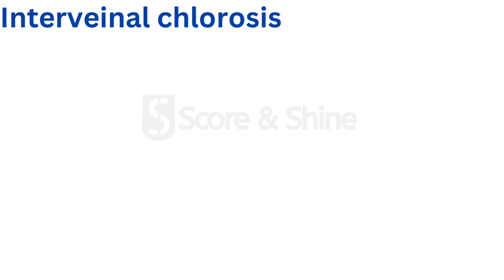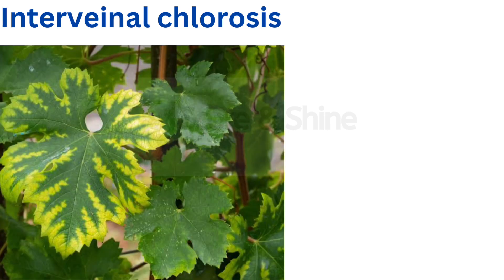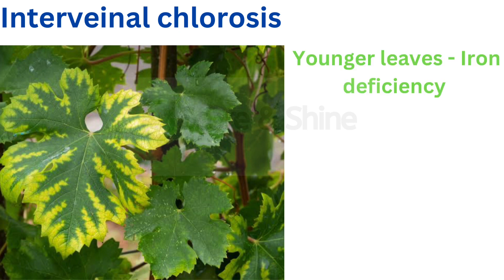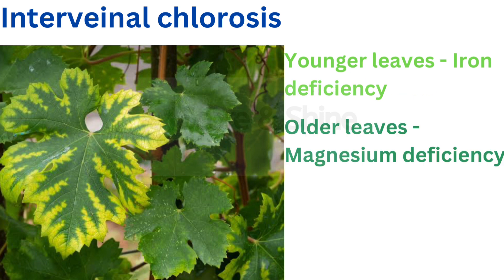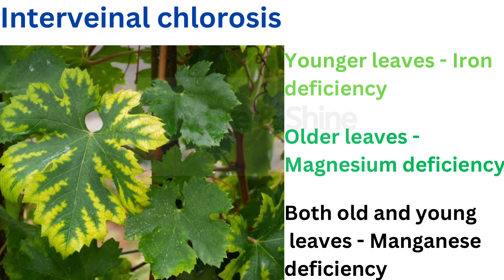Moving on to interveinal chlorosis, which means yellowing of the leaves but the veins remain green. Interveinal chlorosis of younger leaves is due to iron deficiency, and interveinal chlorosis of older leaves is due to magnesium deficiency. If there is complete interveinal chlorosis of the leaves irrespective of younger or older, that will be due to manganese deficiency.